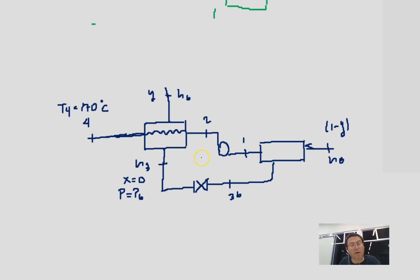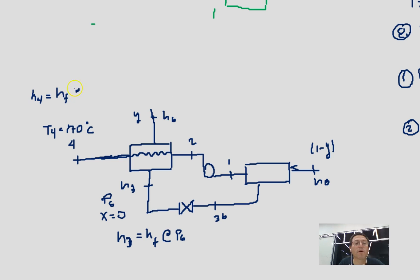So the temperature at the exit of the closed feedwater heater will be 170, the hf at that temperature. We use this trick since we don't have a compressed liquid table.